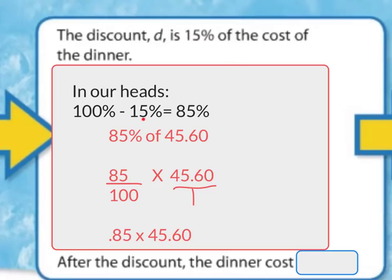If it's a discount, I know we're going to pay less. We have 100% of the cost — it was going to be $45.60 — but we have a coupon of 15% off. So what we're actually going to pay is 100% minus 15%, which is 85%. We're actually going to pay 85% of $45.60. Without a calculator we'd write 85 hundredths of $45.60, but today we get to use calculators. So this is 85%, or 85 hundredths, and we're going to put that into the calculator.